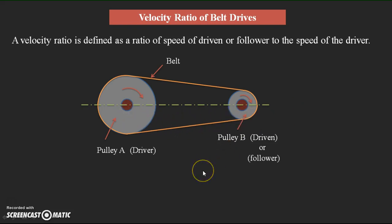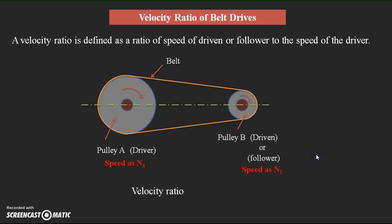Assume the speed of the driver as N1 and the speed of the follower as N2. According to the definition, the velocity ratio is equal to speed of the follower N2 divided by the speed of the driver N1.